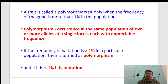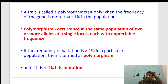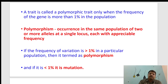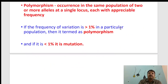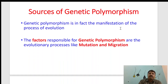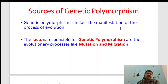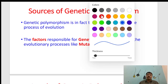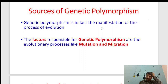In ABO blood groups there are more than two alleles, and in the human leukocyte antigen complex — also known as the MHC complex — there are also more alleles. If the frequency of variation is more than one percent in a population, it is termed polymorphism. If it is less than one percent, it may have resulted from mutation. Genetic polymorphism is in fact the manifestation of the process of evolution.